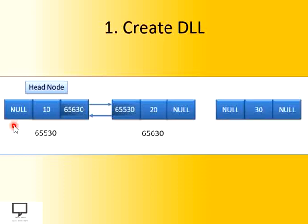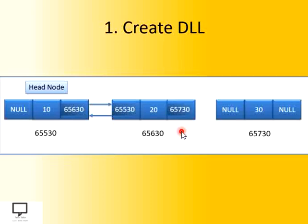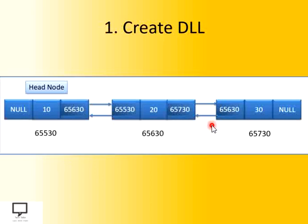Now let's add one more node with a different address location and update the links again. The next field of the node whose data part is 20 gets updated with the address of the next node, forming a logical link forward. Similarly, the previous field of the new node gets updated with the address of the previous node, forming a link in the reverse direction. In this way we can create a doubly linked list.